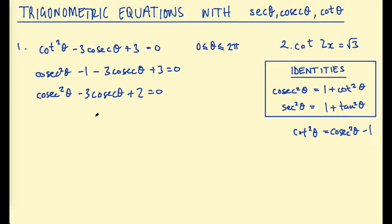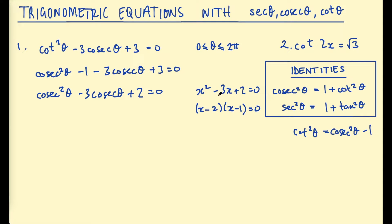If you find it easier, you can write this as x² minus 3x plus 2 equals 0, letting cosecant equal x. Looking at factors of 2 that sum to negative 3: yes, we can factorize this as (x − 2)(x − 1). That gives plus 2 on the end and the negative 3 middle term. So this factorizes nicely and we get cosecant equals 2 or cosecant equals 1.